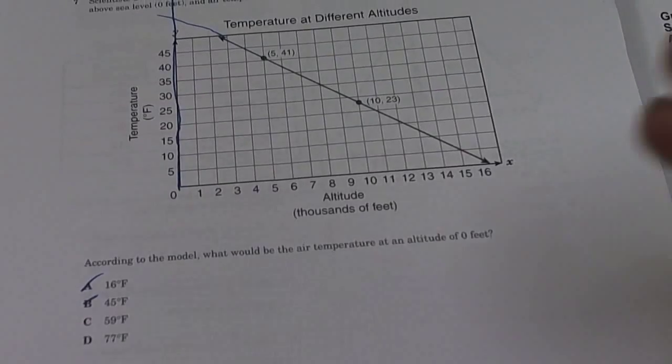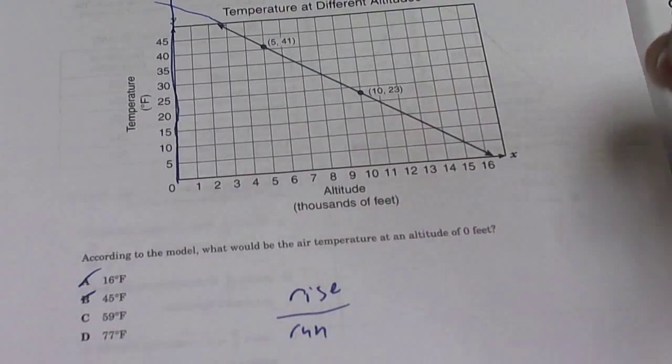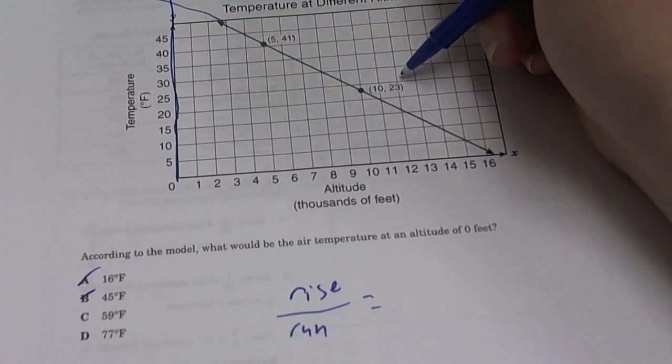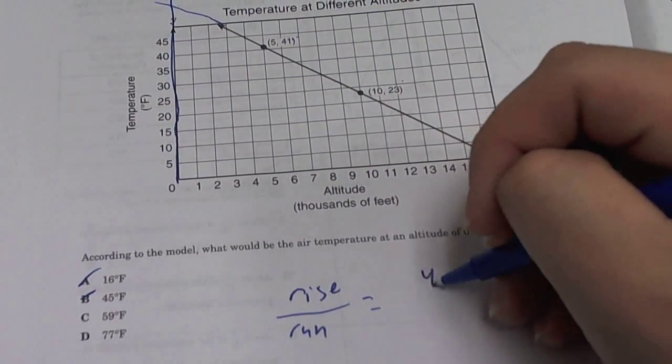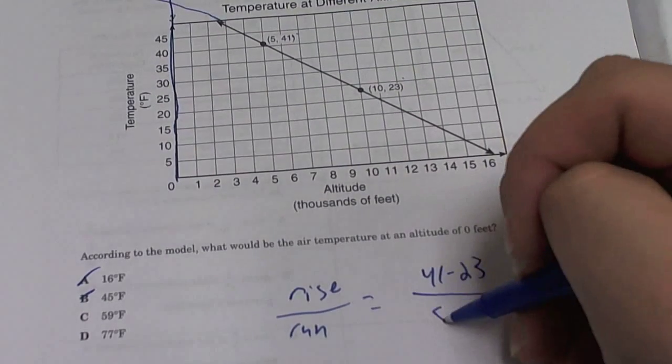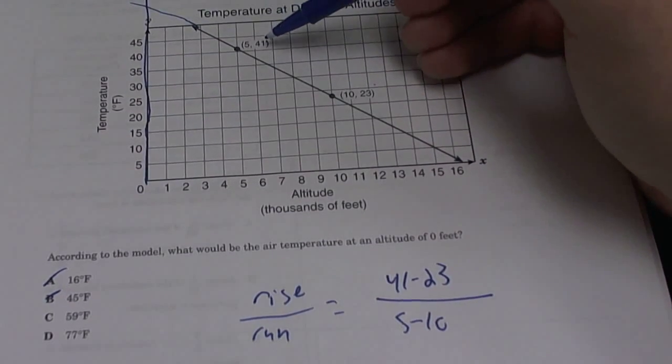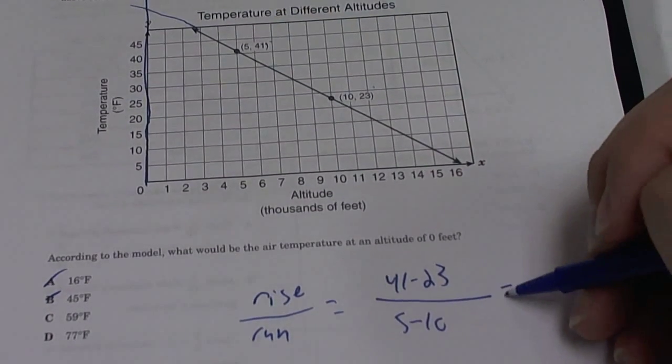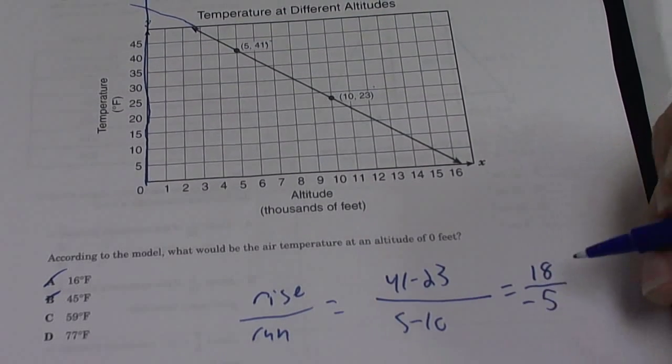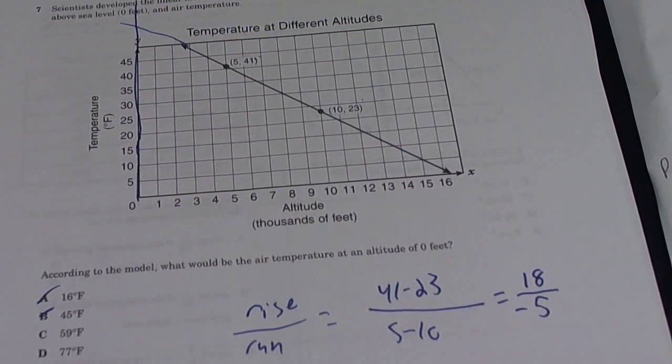With those we have to find the slope. So remember, finding slope is rise over run, which is equal to 41 minus 23 divided by 5 minus 10. Remember we have to keep it in that order - we subtract y1 minus y2, we have to do the same thing here. So we're left with 18 divided by negative 5.